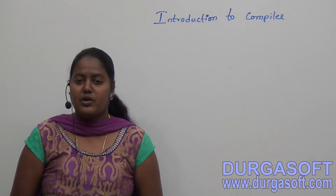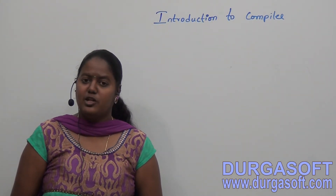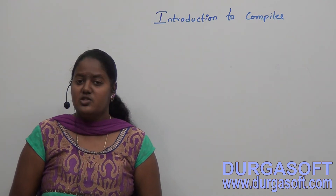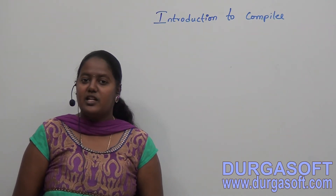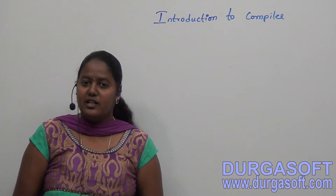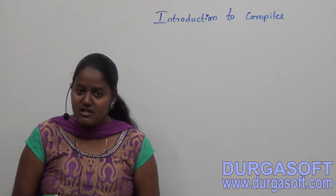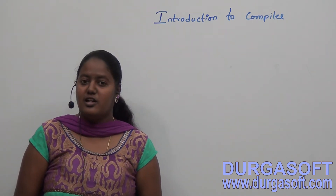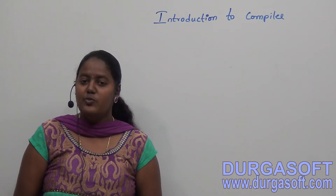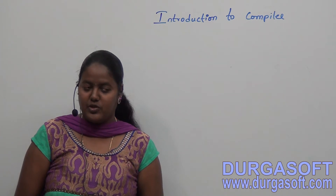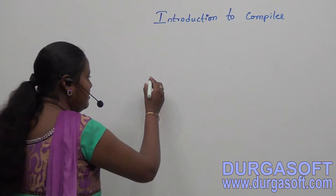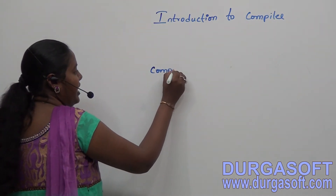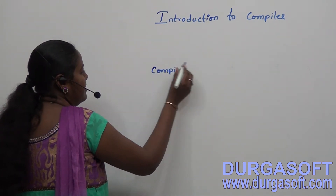IPO stands for Input Process Output. I stands for input, P stands for process, and O stands for output. The compiler takes the programming language instructions as input, processes it, and at last provides the output as machine language.